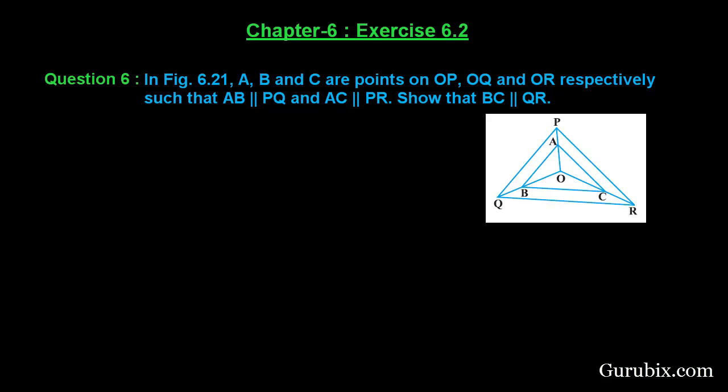Welcome friends, let us solve question number 6 of exercise 6.2 of chapter 6. The question says in figure 6.21, A, B, and C are points on OP, OQ, and OR respectively, such that AB is parallel to PQ and AC is parallel to PR. Show that BC is parallel to QR.